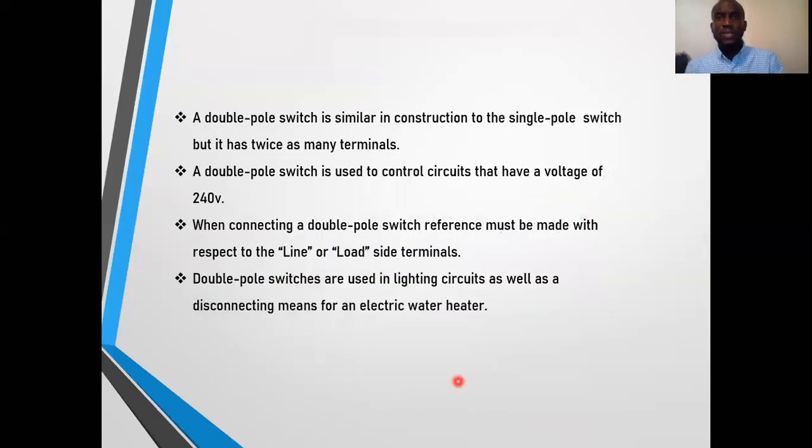A double-pole switch is similar in construction to the single-pole switch, but it has twice as many terminals. A double-pole switch is used to control circuits that have a voltage of 240 volts. When connecting a double-pole switch, reference must be made with respect to line or load side terminals. Because, as we say, this switch has a single throw, but two contacts are being operated at the same time. So if you have any crossing between line and load, the switch will not work properly. Double-pole switches are used in lighting circuits for those large lights that require 240 volts, as well as a disconnecting means for an electric water heater.